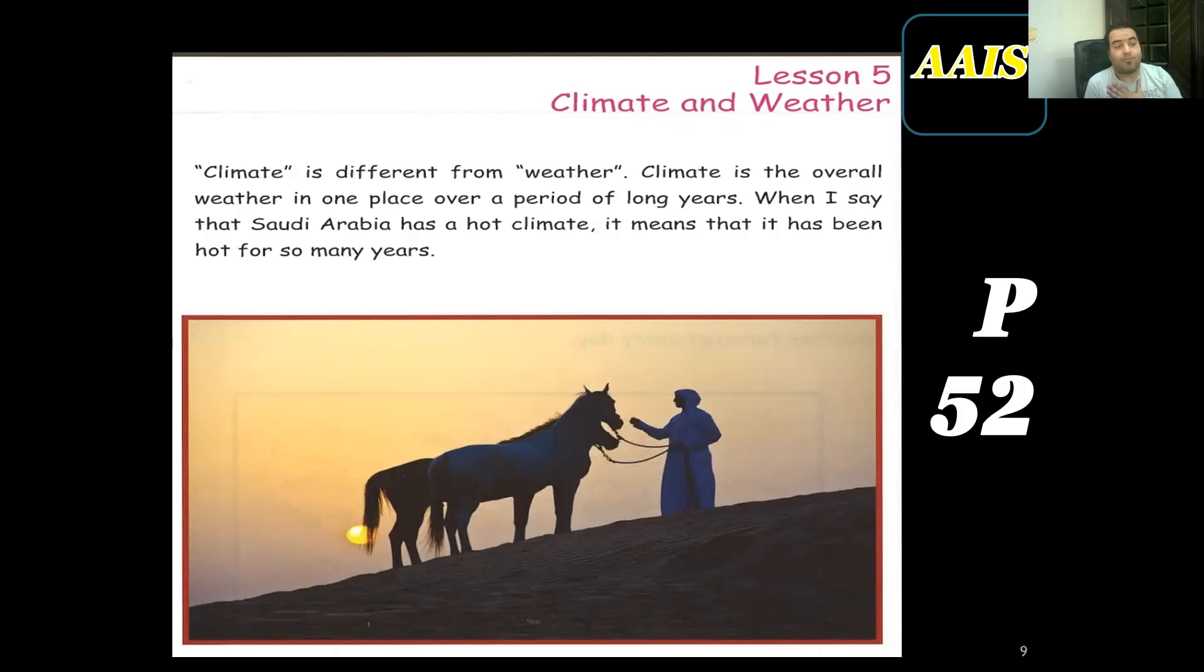When I say Saudi has a hot climate, that means it's not only today and tomorrow, it's not only for the coming three days because that's the weather. Today it's really hot, the weather today, because maybe you're in a different country and it is hot today but for three days, but most of the year is cold.